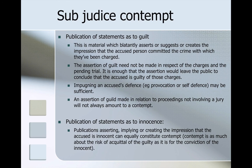Publications of statements as to guilt are material which blatantly asserts or suggests or creates the impression that the accused person committed the crime with which they've been charged. The assertion of guilt need not be made in respect of the charges at pending trial — it is enough that the assertion would lead the public to conclude the accused is guilty. Impugning an accused's defence, such as provocation or self-defence, may also be sufficient. Much as statements as to guilt can be contempt, so can statements as to innocence — publications asserting, implying, or creating the impression that the accused is innocent can equally constitute contempt. Contempt is as much concerned about the risk of acquittal for the guilty as conviction of the innocent.